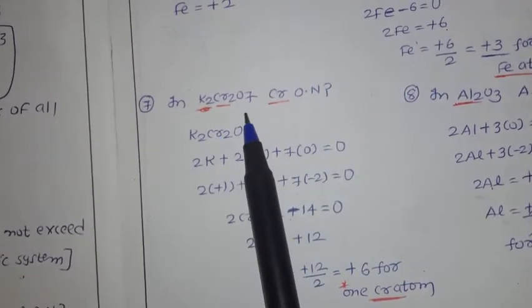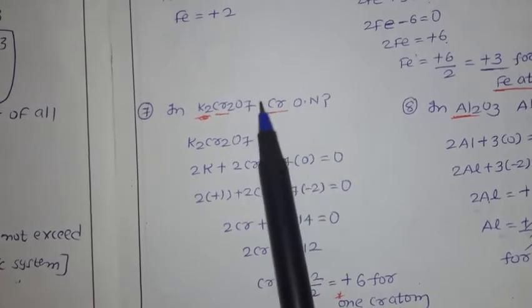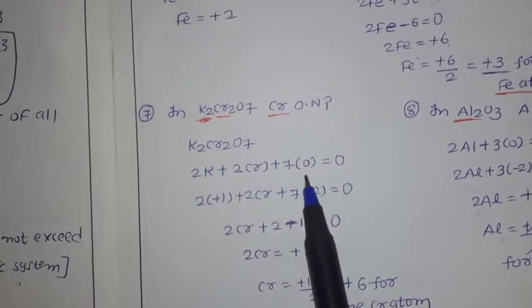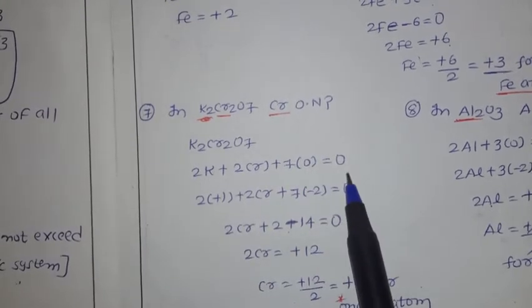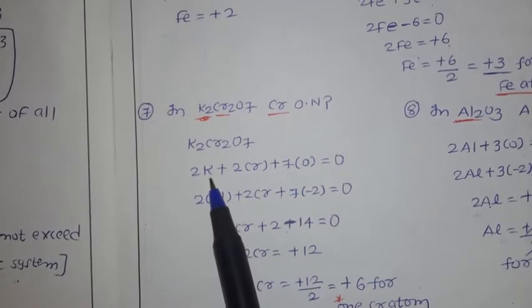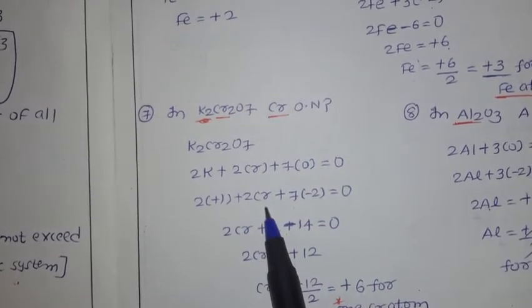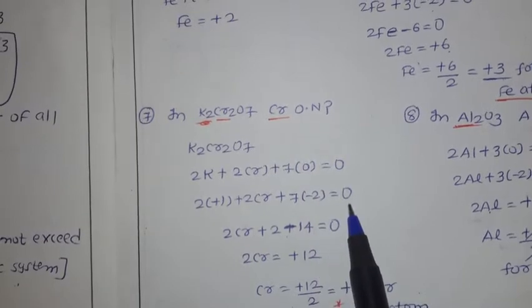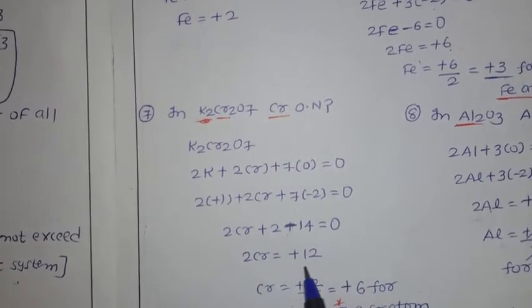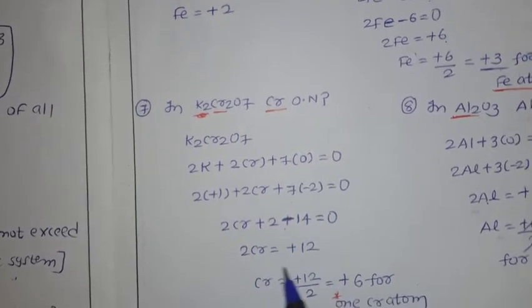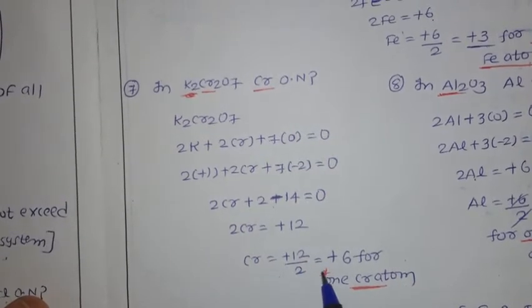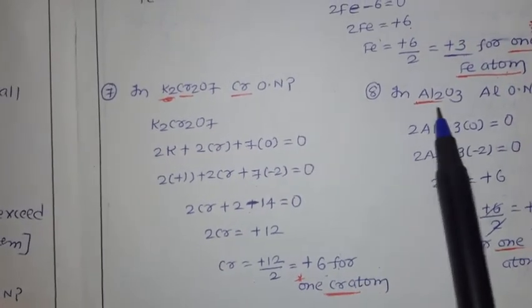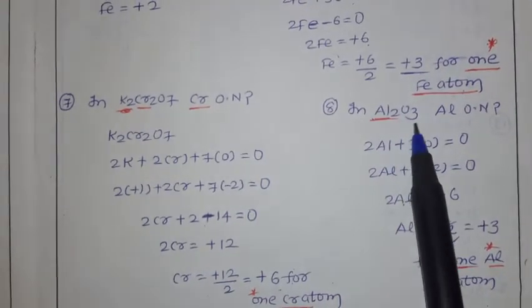In potassium dichromate K2Cr2O7, what is the chromium oxidation number? 2 potassium plus 2 chromium plus 7 oxygen atoms equal to 0 (neutral molecule). Potassium is plus 1. So: 2 times plus 1 plus 2Cr plus 7 times minus 2 equals 0. Simplifying: 2Cr plus 2 minus 14 equals 0, so 2Cr equals plus 12. For 1 chromium: plus 12 divided by 2 equals plus 6. For Al2O3, you have to work out.